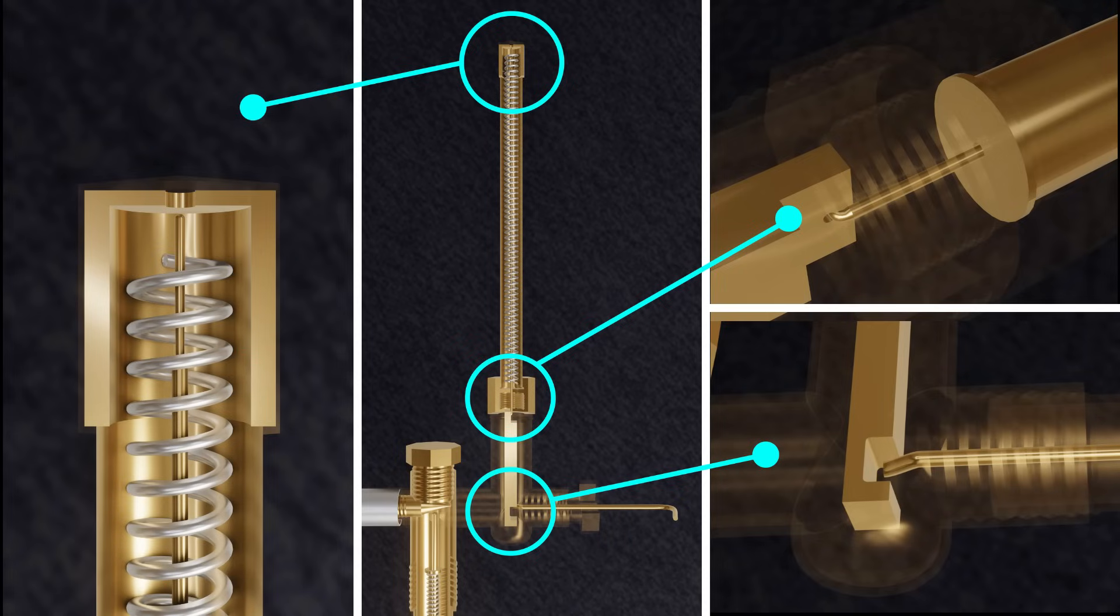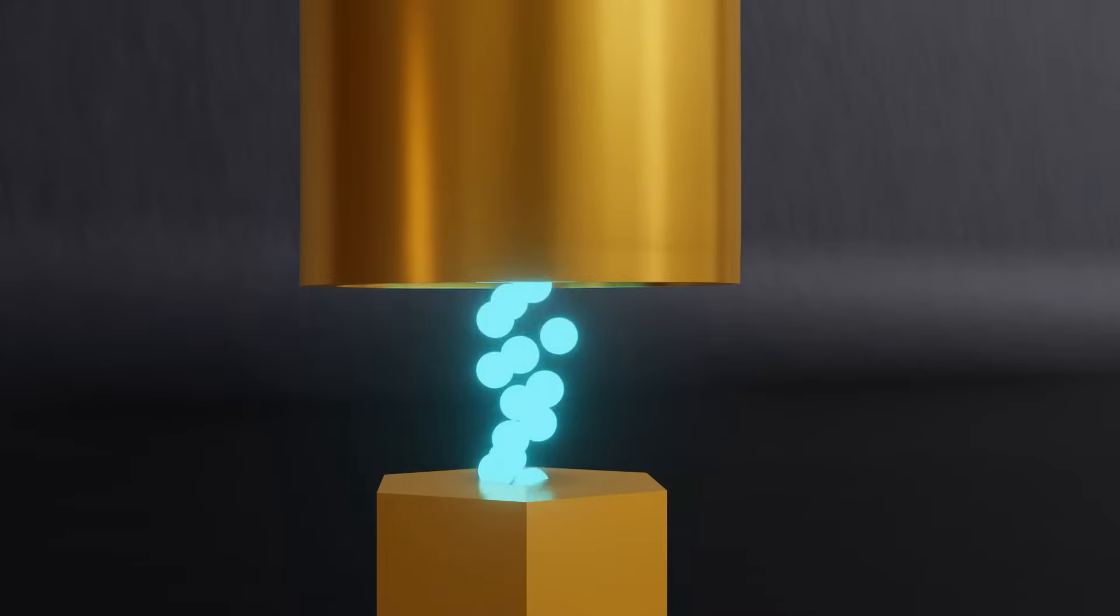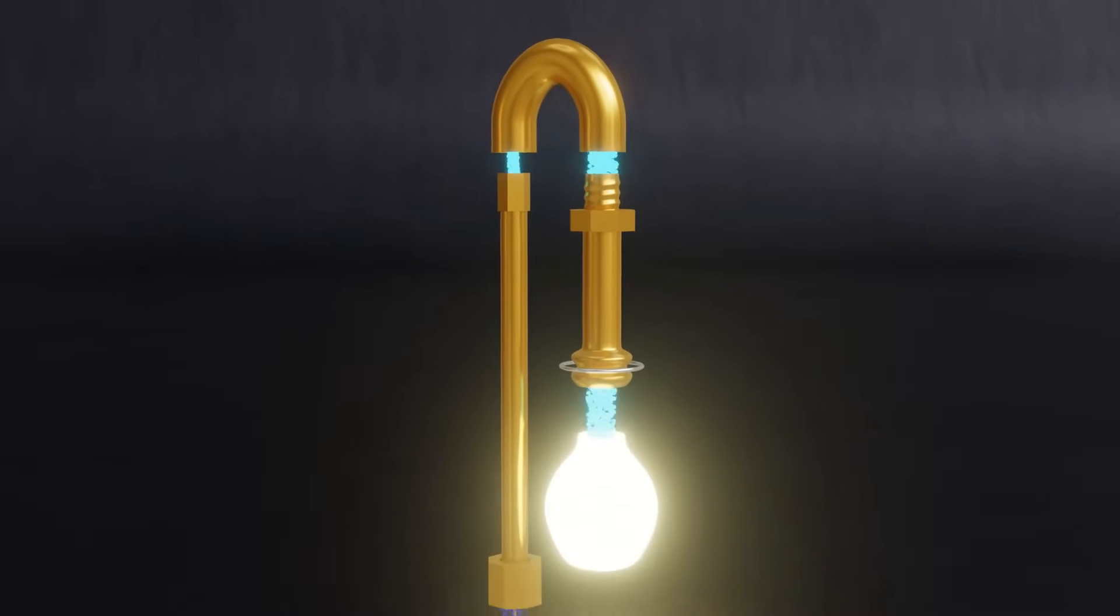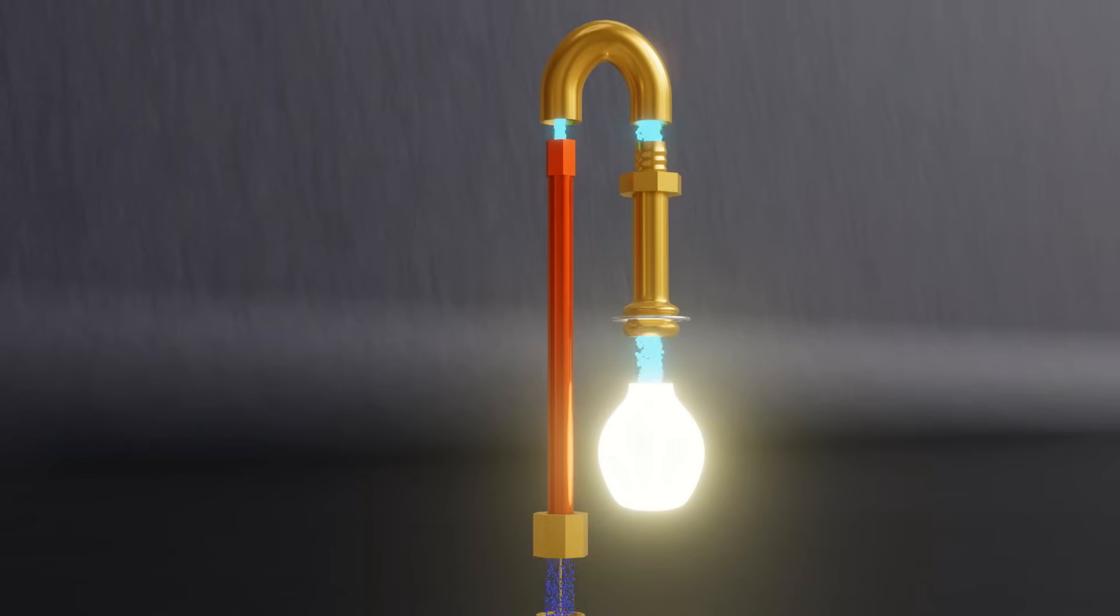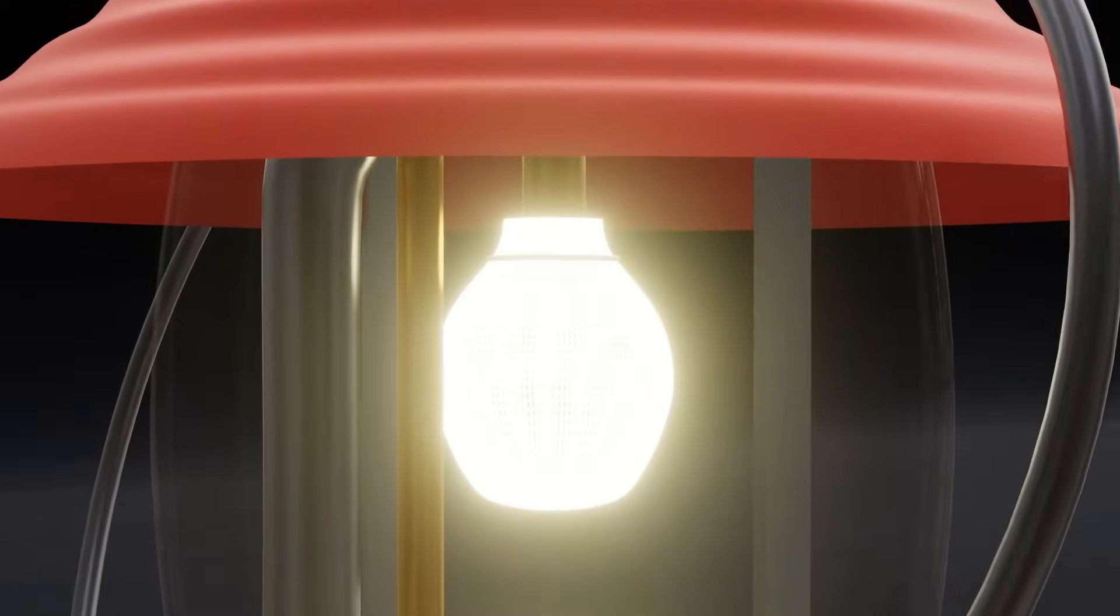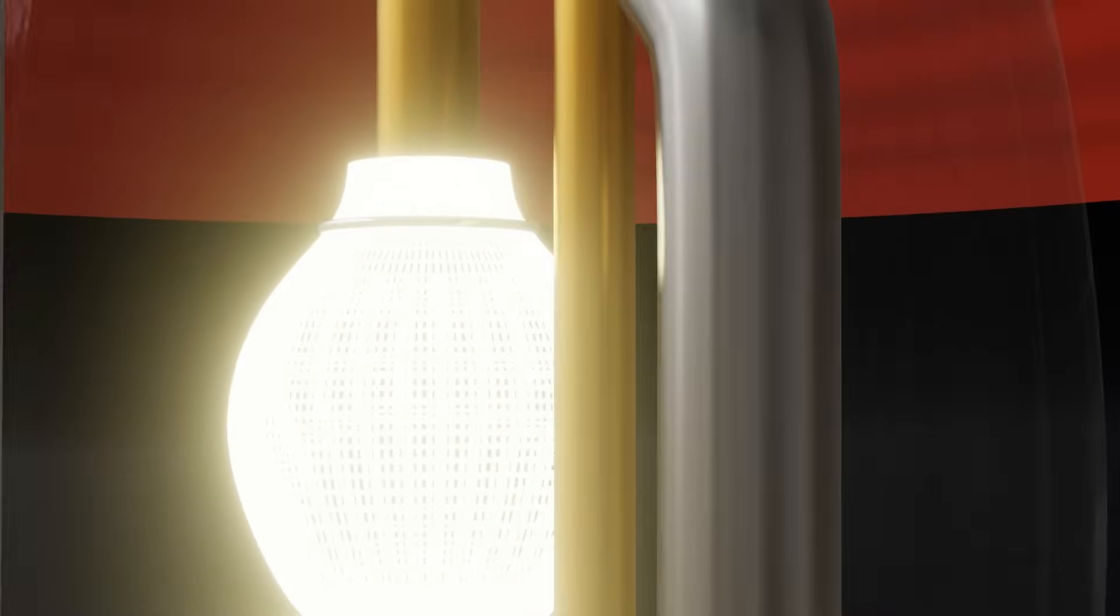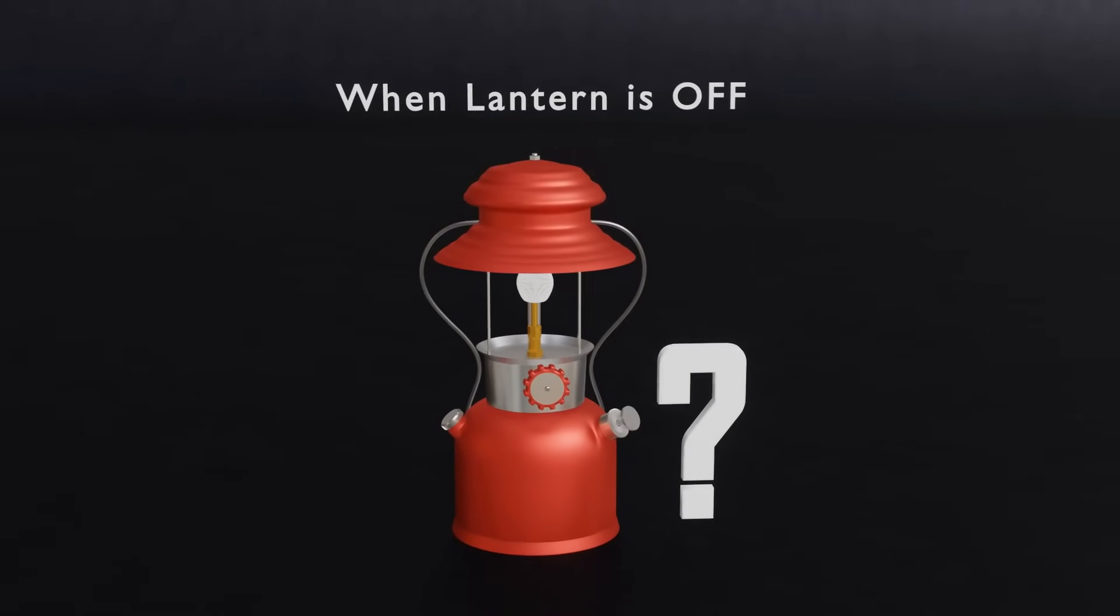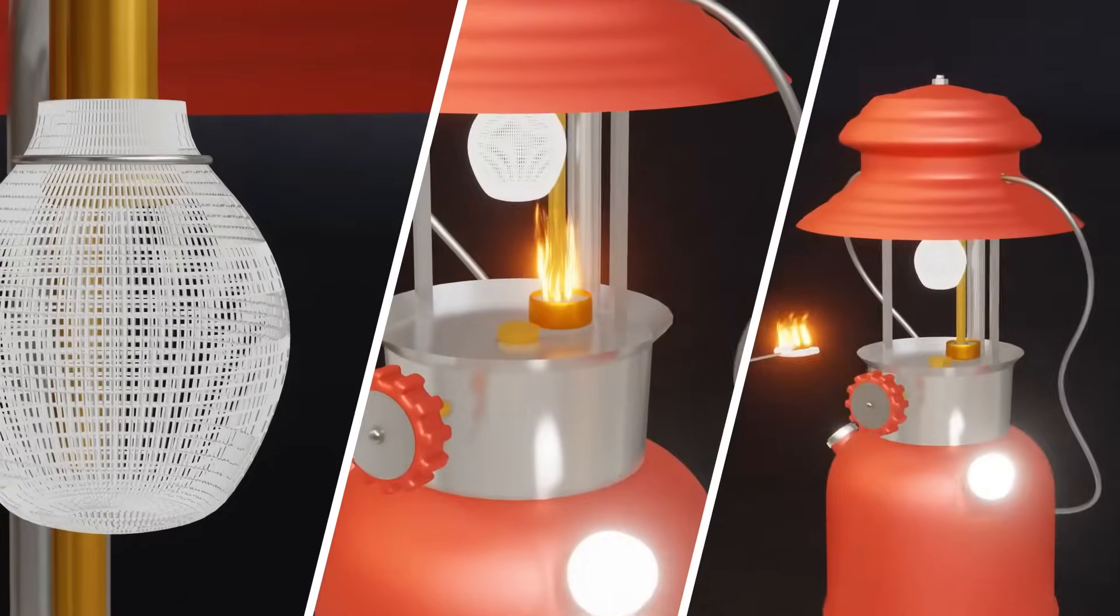The primary role of the generator is to convert liquid fuel into vapor fuel. This process is crucial in pressure lanterns, as it allows the fuel to burn more efficiently, resulting in a brighter light, which distinguishes pressure lanterns from regular wick-type lanterns. You might be wondering, where does the generator get the heat to convert the liquid fuel into vapor? When the lantern is running, the combustion of fuel inside the mantle produces enough heat to power the generator, converting liquid fuel into vapor fuel and keeping the system running smoothly. But this raises an intriguing question: how does the generator get the heat it needs to start when the lantern is initially off? After all, the lantern relies entirely on vaporized fuel to function.